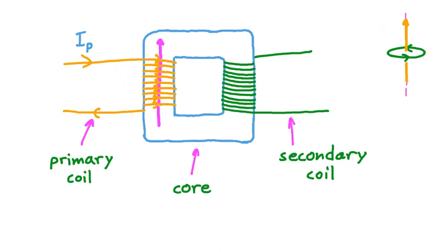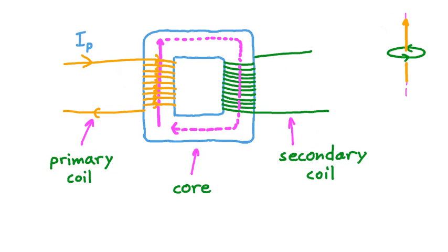This is where the core material comes in. One of the main purposes of the core of a transformer is to channel the magnetic field lines around the core, as though they're moving in a circuit. This means that the field produced within the windings of the primary coil then travels all throughout the rest of the core and goes through the windings of the secondary coil as well. And this is where electromagnetic induction comes in.